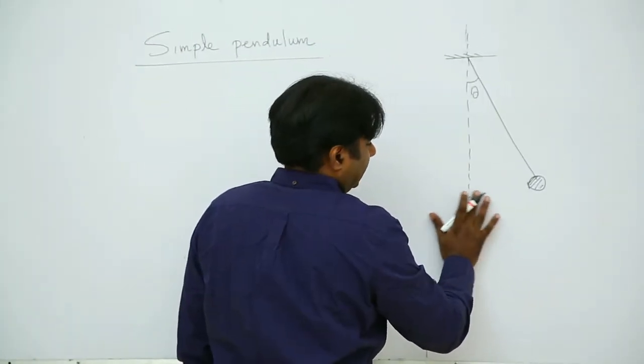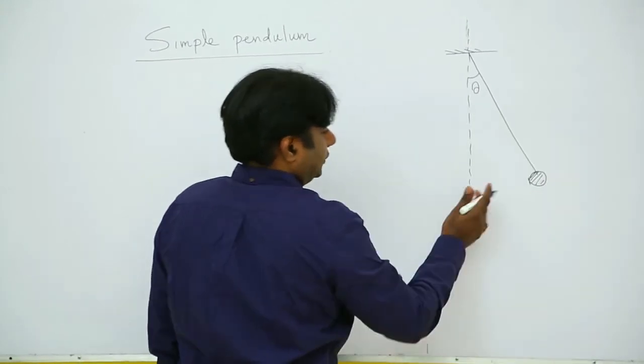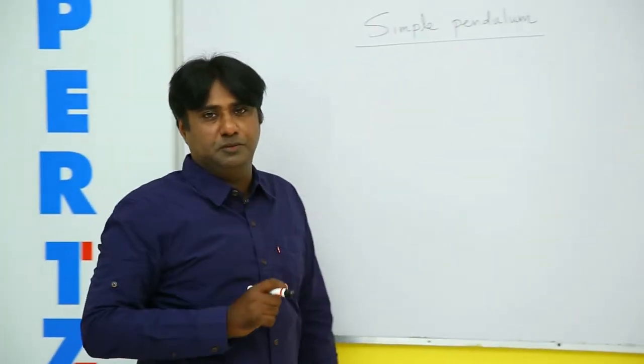At an instant, bob is at a position which makes an angle theta with the vertical. So this was initial position. I rub this off. Now it is taken to this point. That is the position of the bob at an instant.